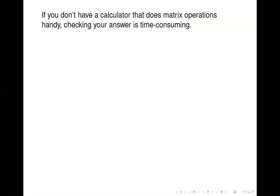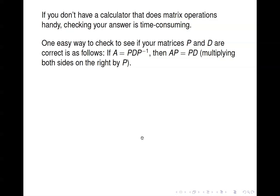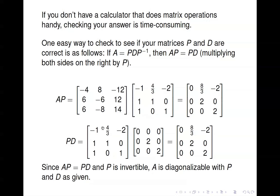For the 3 by 3 case, computing P inverse is less straightforward without a calculator. An easier way to check the answer is to note that if A equals PDP inverse, multiplying both sides on the right by P gives AP equals PD. Since this only involves matrix multiplication — no inverses needed — we can verify by computing AP and PD separately. In this case, they are indeed equal, confirming that our P and D are correct.